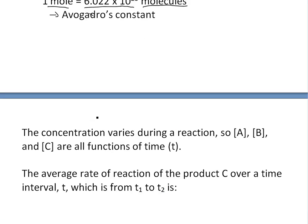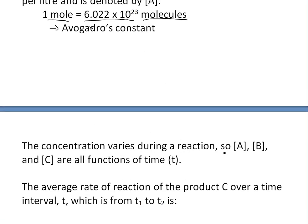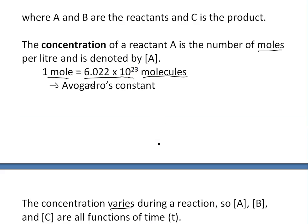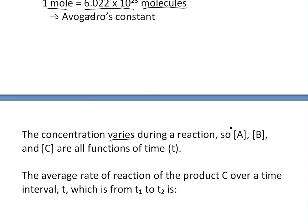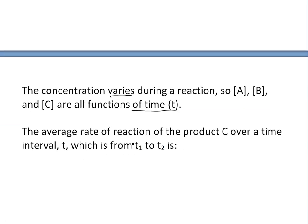Now, the concentration during a reaction varies. It could start off slow and end fast, or start fast and end slow. Basically, the concentration of A, B, and C are all functions of time and change depending on whatever their rate of reaction is.